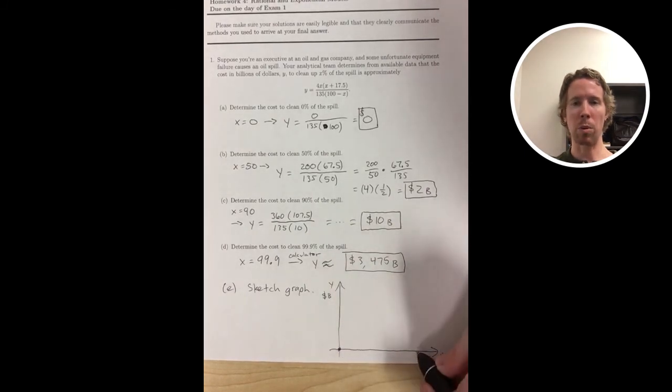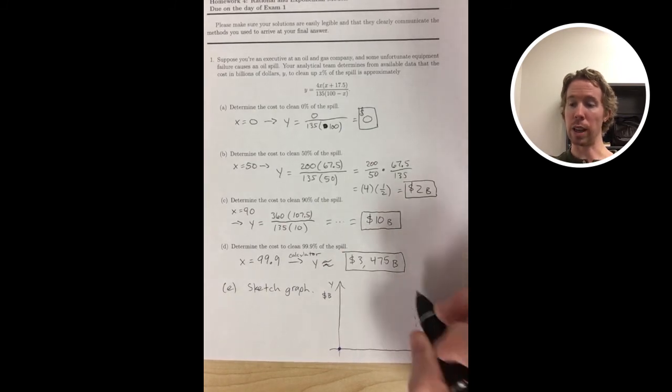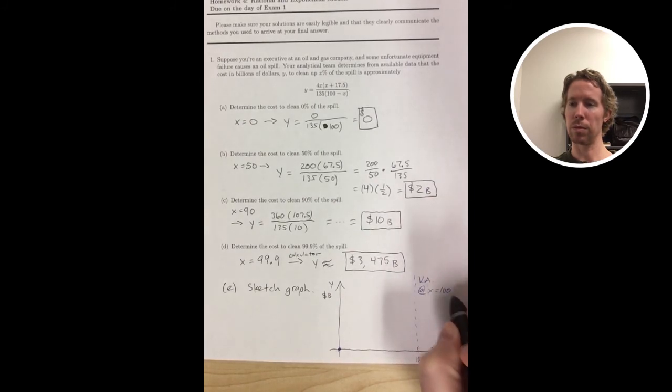And then I'll just plot my points and connect them with a smooth curve and take into account that I've got that asymptote.